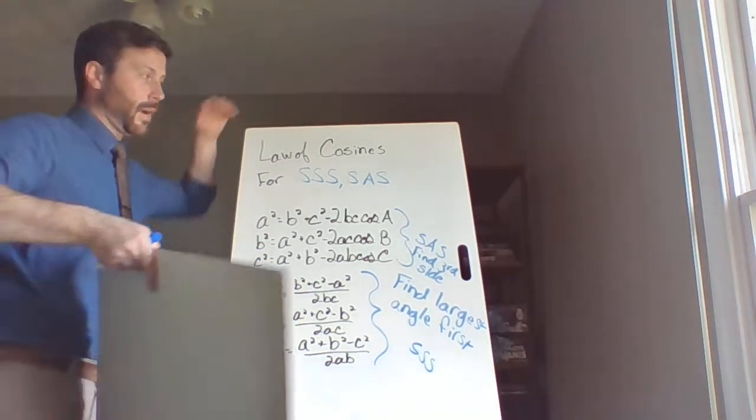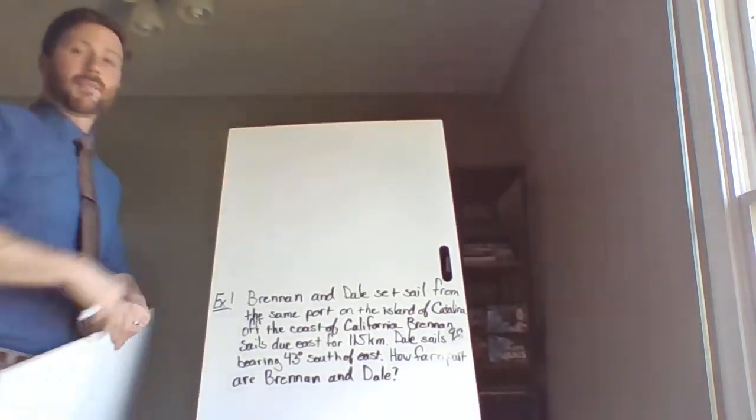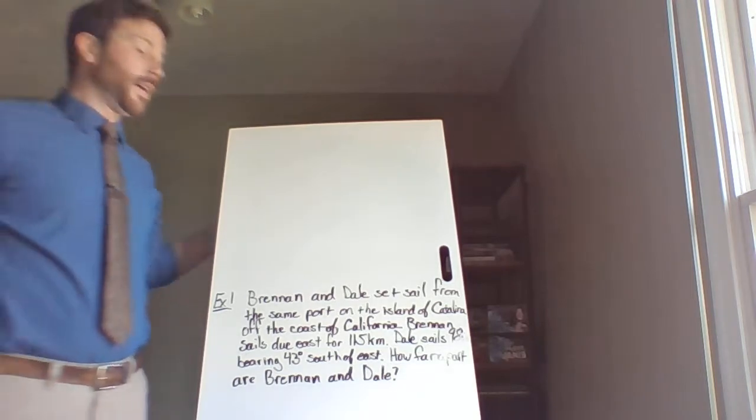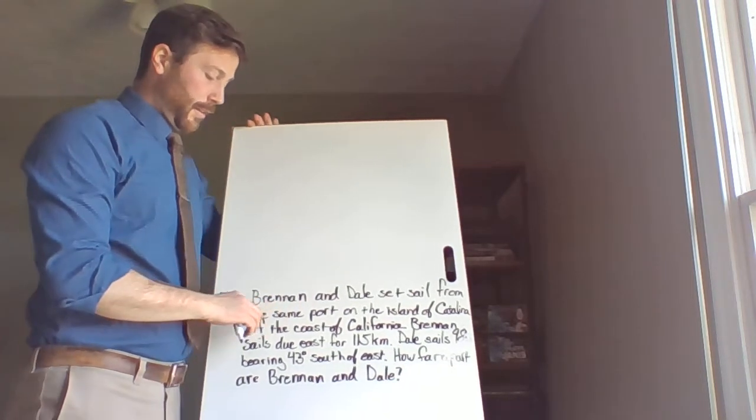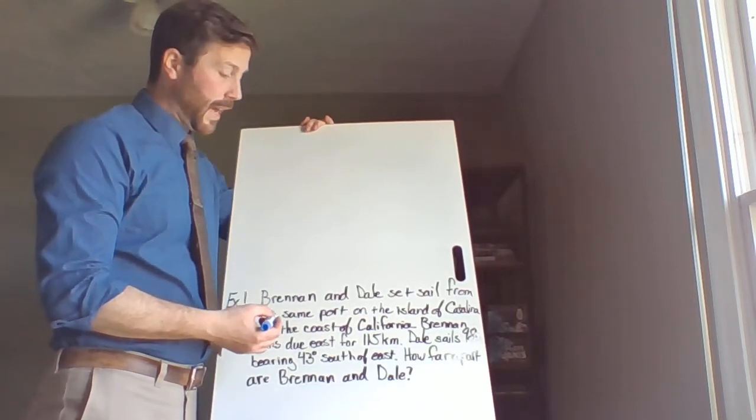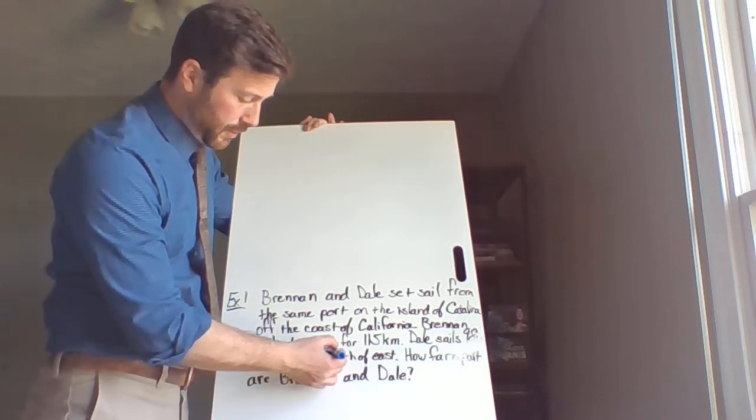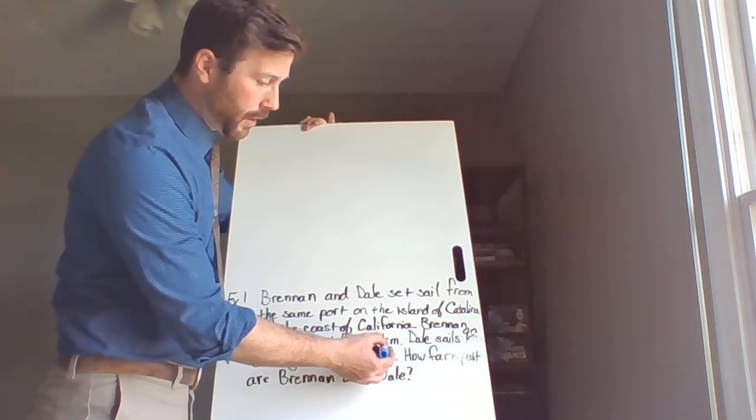In this story problem, we've got Brennan and Dale. Brennan and Dale set sail from the same port on the island of Catalina, which is off the coast of California. Brennan sails due east for 115 kilometers.